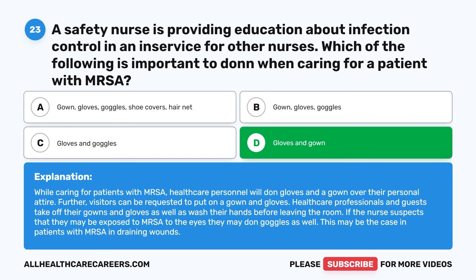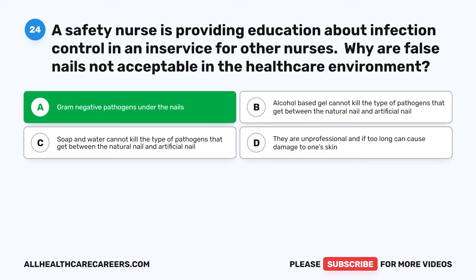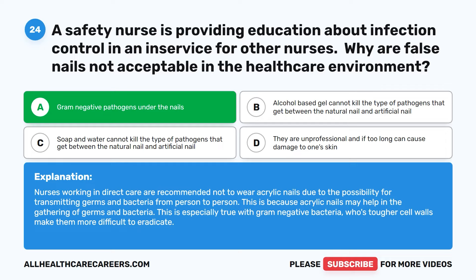Question 24. A safety nurse is providing education about infection control. Why are false nails not acceptable in the healthcare environment? A. Gram-negative pathogens under the nails. B. Alcohol-based gel cannot kill the type of pathogens that get between the natural nail and artificial nail. C. Soap and water cannot kill the type of pathogens that get between the natural nail and artificial nail. D. They are unprofessional and if too long can cause damage to one's skin. The correct answer is A: Gram-negative pathogens under the nails. Nurses in direct care are recommended not to wear acrylic nails due to the possibility of transmitting germs and bacteria from person to person. This is especially true with gram-negative bacteria whose tougher cell walls make them more difficult to eradicate.